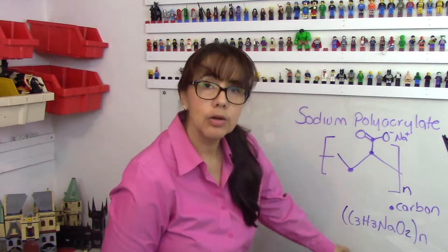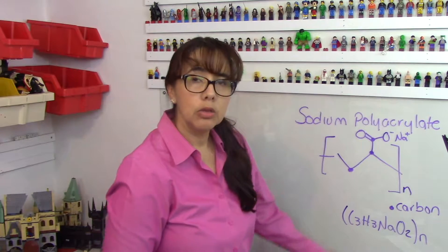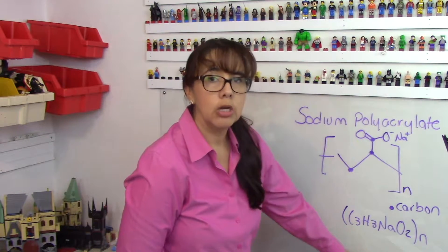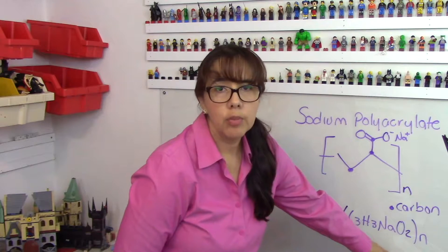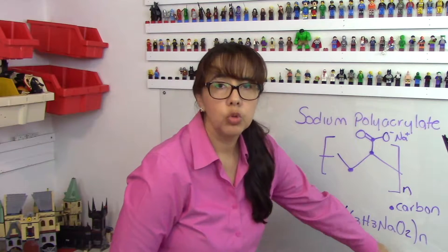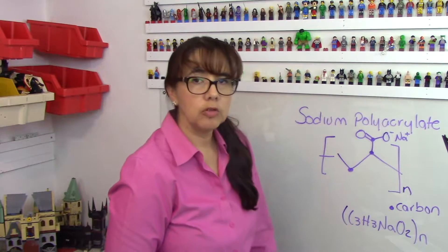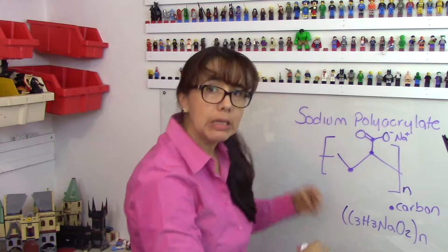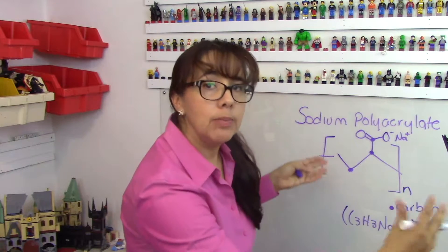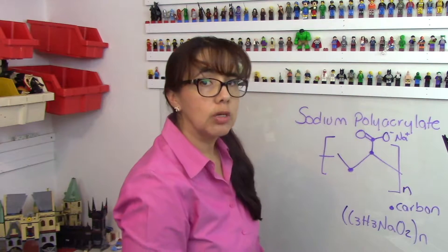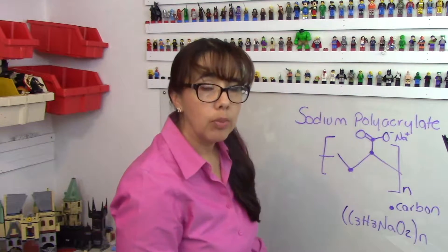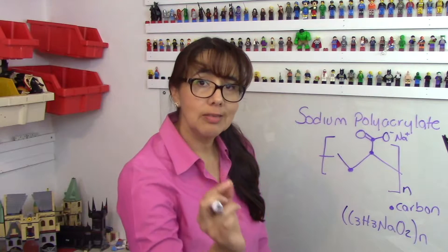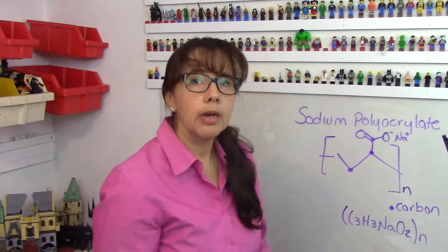In here we have three atoms of carbon, three atoms of hydrogen, one atom of sodium, two atoms of oxygen, and this unit can repeat many, many, many times — that's why it's called a polymer. This one is just the monomer, just the basic molecule.